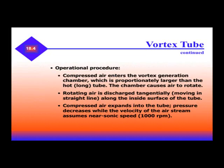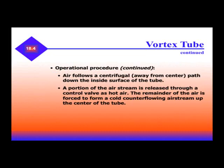The sequence of operation for the vortex tube is that compressed air enters a vortex generation chamber, which is proportionally larger than the hot, long tube. The chamber causes the air to rotate, and rotating air is discharged, moving in a straight line along the inside surface of the tube. The compressed air expands into the tube and pressure decreases while the velocity of the air stream assumes near sonic speed, about 1000 RPM. Air follows a centrifugal path down the inside surface of the tube. A portion of the air stream is released through the control valve as hot air, and the remainder of the air stream is forced to form cold air counter-flowing upstream.